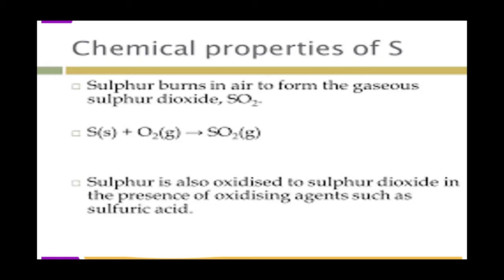If we react copper and sulfur, we get a black substance which is copper sulfide — so sulfur reacts with metals to form metal sulfides. If you react carbon and sulfur, you get carbon disulfide (CS₂), which is very poisonous, so you should be cautious when preparing it in a laboratory. Hydrogen combines with sulfur to form hydrogen sulfide (H₂S), which smells like rotten eggs — that's why we prepare that gas in a fume chamber.